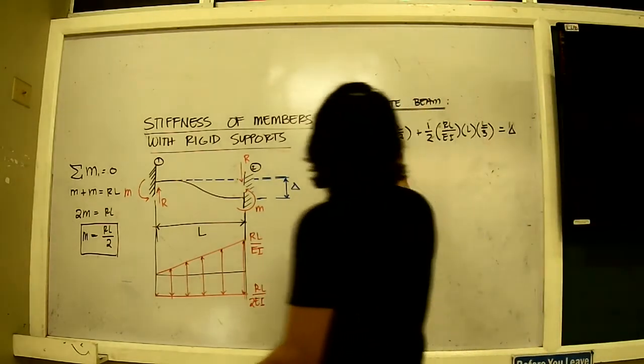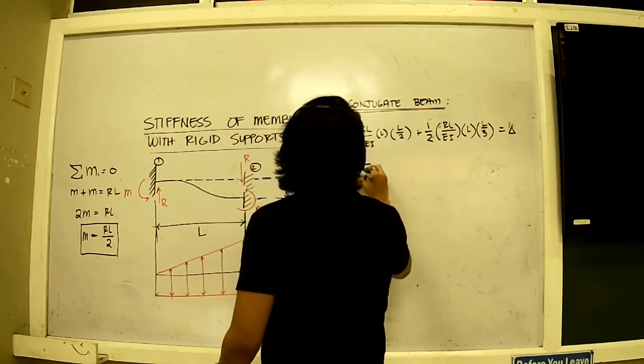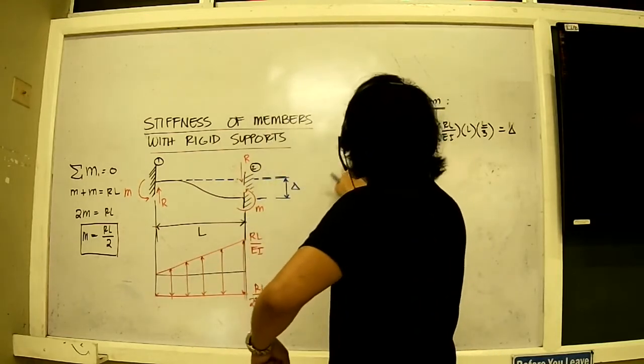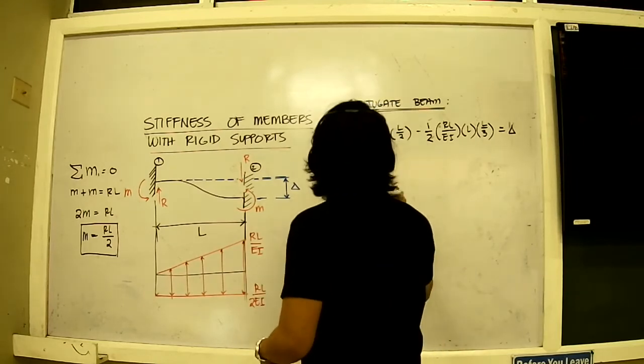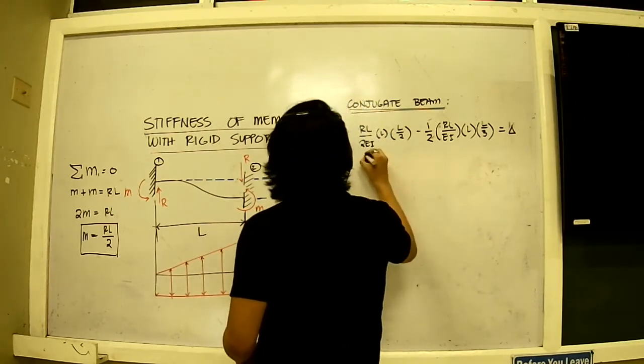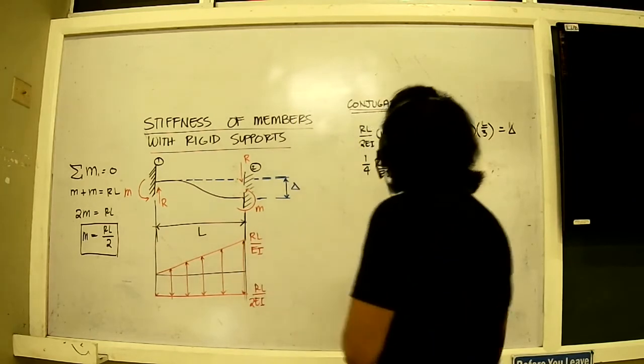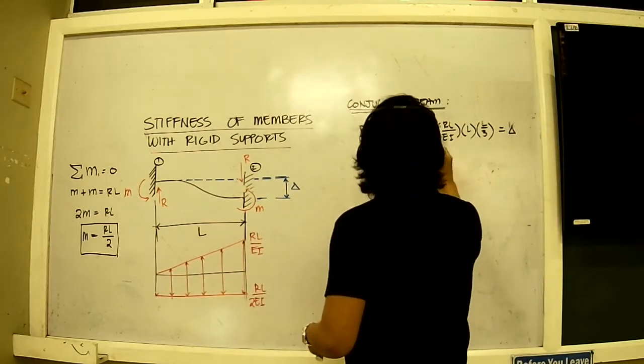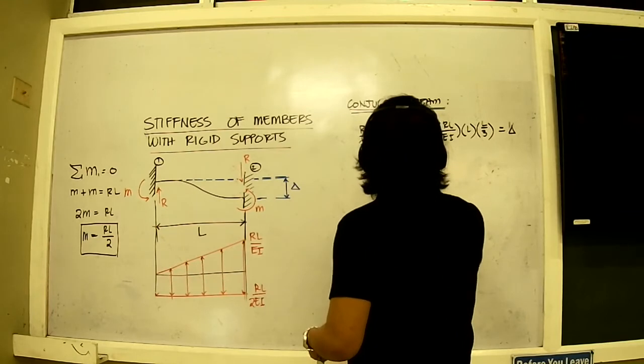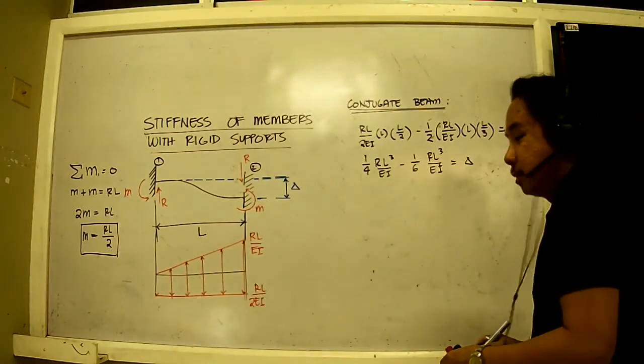This is equal to, it's negative one-fourth. Oh, I'm sorry, I just mixed up the negatives and the positives. So this is L over 4. One-fourth RL cubed over EI minus one-half RL cubed over, one-half times 3, that is 6, over 6EI. We have this expression.